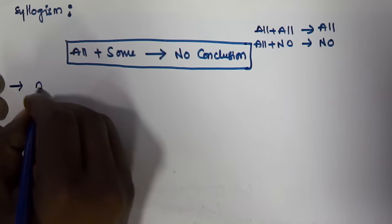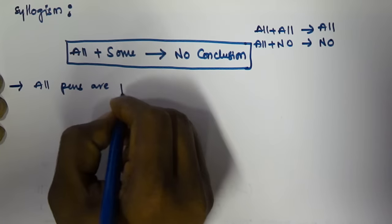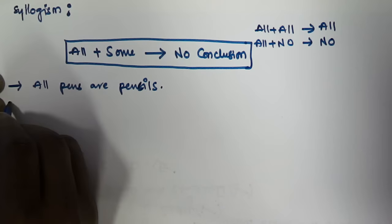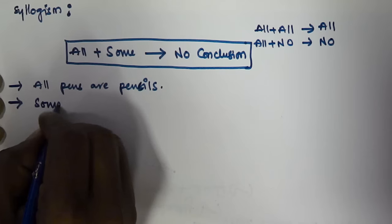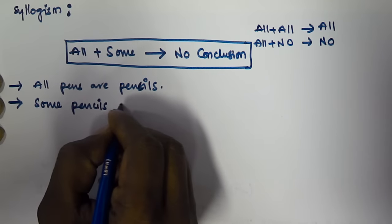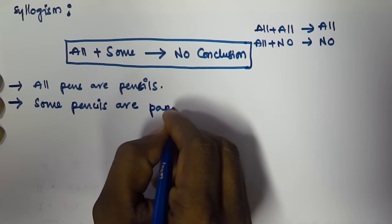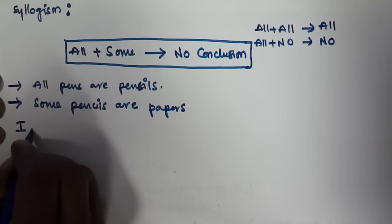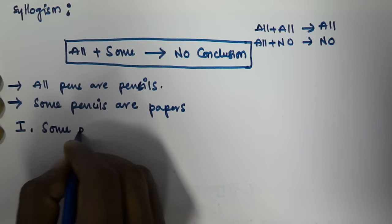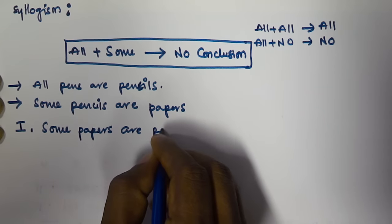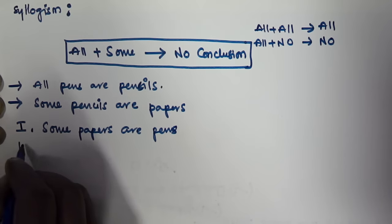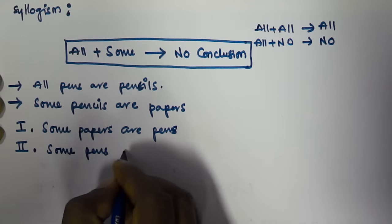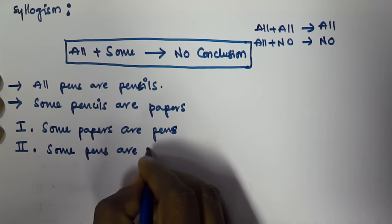So the first syllogism given is: all pens are pencils. And the second syllogism given is: some pencils are papers. The first conclusion given is: some papers are pens. And the second conclusion given is: some pens are not papers.